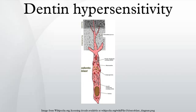Dentine contains many thousands of microscopic tubular structures that radiate outwards from the pulp. These dentinal tubules are typically 0.5 to 2 micrometers in diameter. Changes in the flow of the plasma-like biological fluid present in the dentinal tubules can trigger mechanoreceptors present on nerves located at the pulpal aspect, thereby eliciting a pain response.